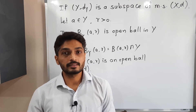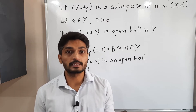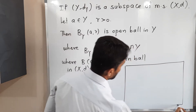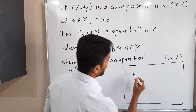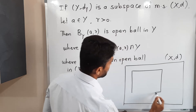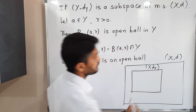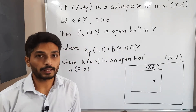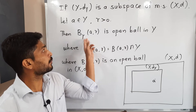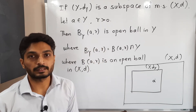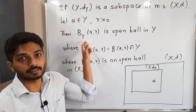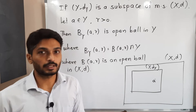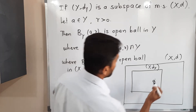Now let us see how an open ball can be defined in a subspace (Y,dY) of a metric space (X,d). We start again with a metric space (X,d), and (Y,dY) is a subspace. We take a point 'a' in Y and a radius r. Then B_Y(a,r) is an open ball in the subspace (Y,dY). The subscript Y indicates this is an open ball in Y; if no subscript is mentioned, it is an open ball in X.